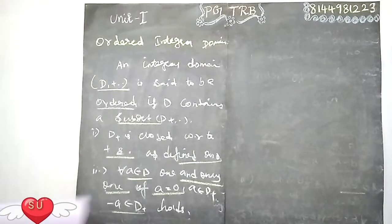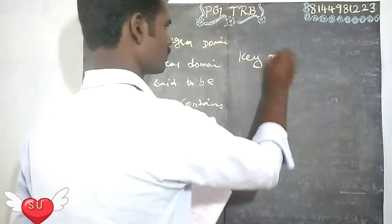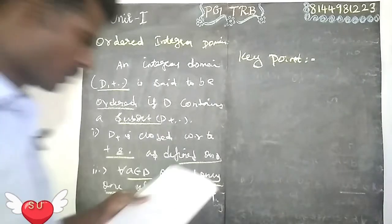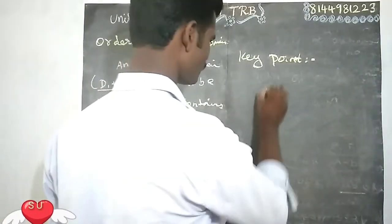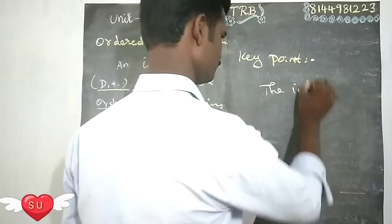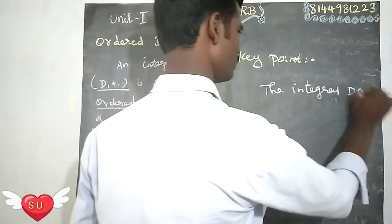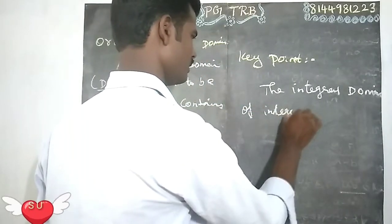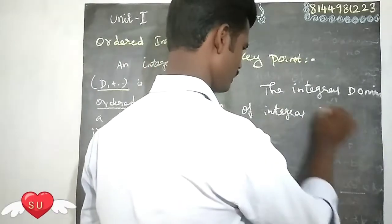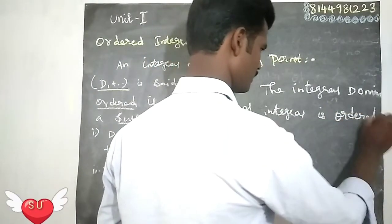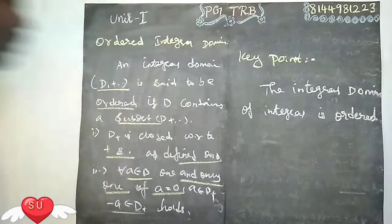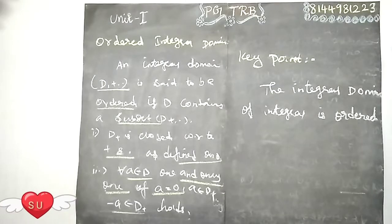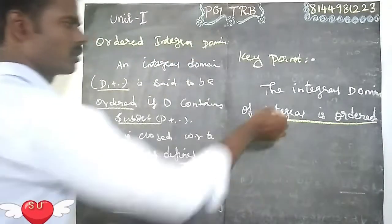Here are the key points. The integral domain of integers is ordered. So the integral domain of integers is our key example of an ordered integral domain.